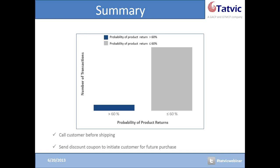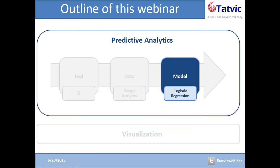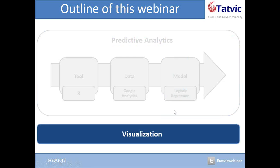Now let me summarize what we can do once we have identified transactions with probabilities greater than 0.6. As a basic step, we can call the customer before shipping the product to verify the purchase. Additionally, we can send discount codes to this set of customers to incentivize them not to return the product. There are many cost-effective ideas that can be executed once higher probability return transactions are identified. By taking these actions, we can probably increase our revenue and decrease the return rate. This is how I built the model and predicted for the new test data set — this was the whole process of modeling.